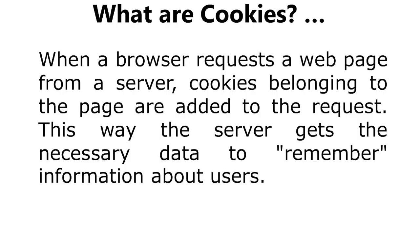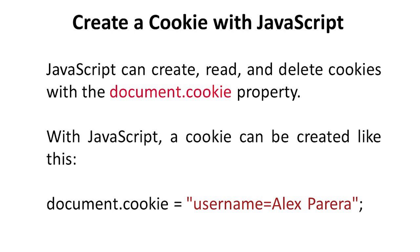When a browser requests a web page from a server, cookies belonging to the page are added to the request, so the server gets the necessary data to remember information about the users. To create a cookie with JavaScript, JavaScript can create, read, and delete cookies with the document.cookie property. With JavaScript, a cookie can be created like this: document.cookie = "username=Alex Pereira".